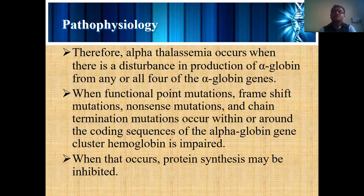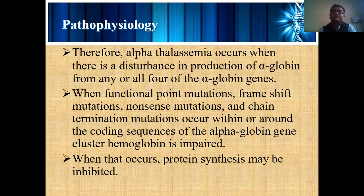Whatever red blood cells are normally formed, they are not properly formed, and those that are formed are somewhat destructive in nature. When functional point mutations, frameshift mutations, nonsense mutations, and gene termination mutations occur within or around the coding sequence of the alpha globulin gene, another type of mutation occurs causing another type of cell to form, which causes changes in function — the cells no longer perform their routine synthesis function.